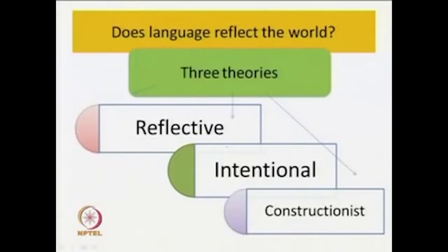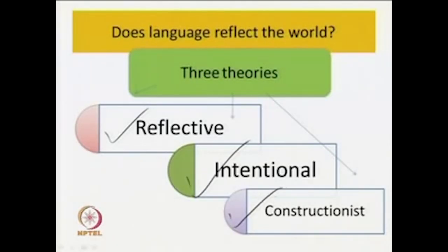Now, having talked about the linguistic turn, a very important question comes to mind: does language reflect the world? There are three theories which try to deal with this question. Among these are, number one, the reflective theory or reflective school of thought; next, the intentional theory; and finally, the constructionist theory. The relation between language and the world — language and reality — are tried to be explained by these three different theories. To explain them, we are looking at an important essay by Stuart Hall.